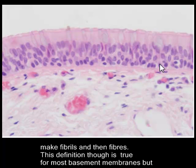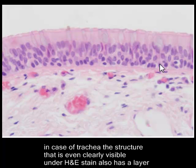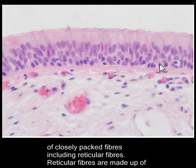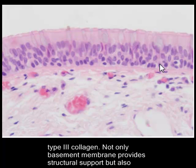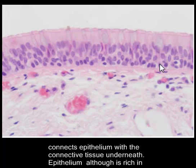In the case of respiratory mucosa, the structure that is clearly visible under hematoxylin and eosin stain also has a layer of closely packed fibers, which includes reticular fibers. Reticular fibers are made up of type 3 collagen.